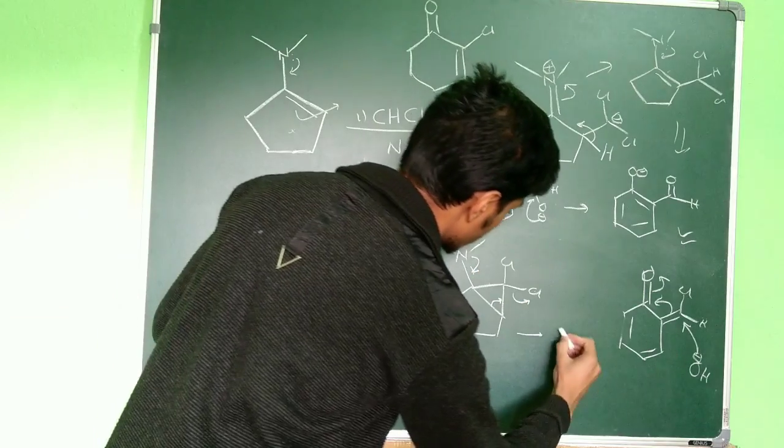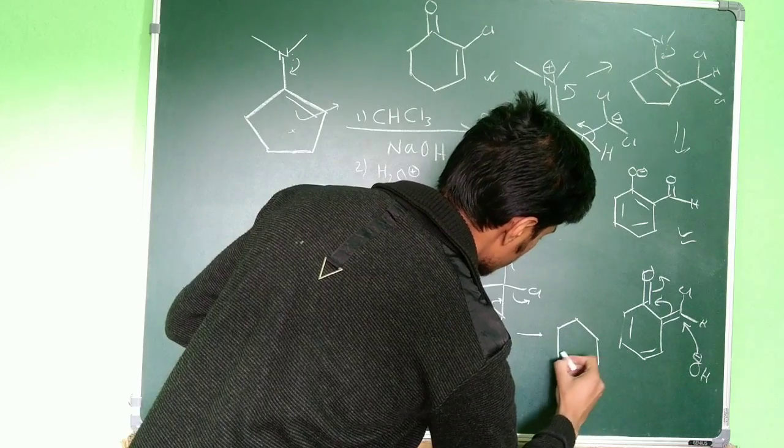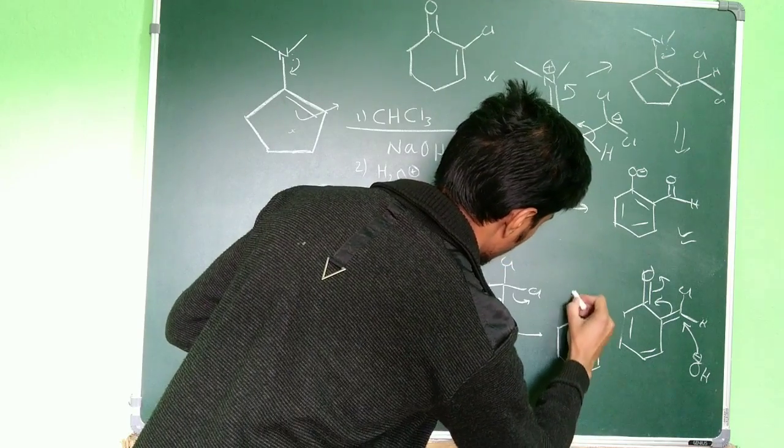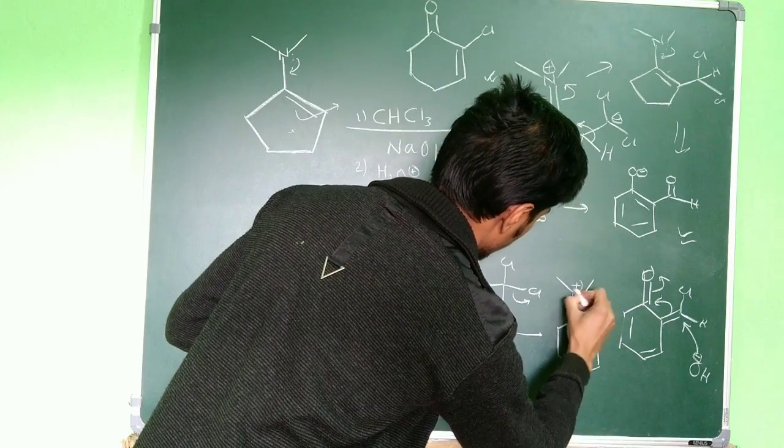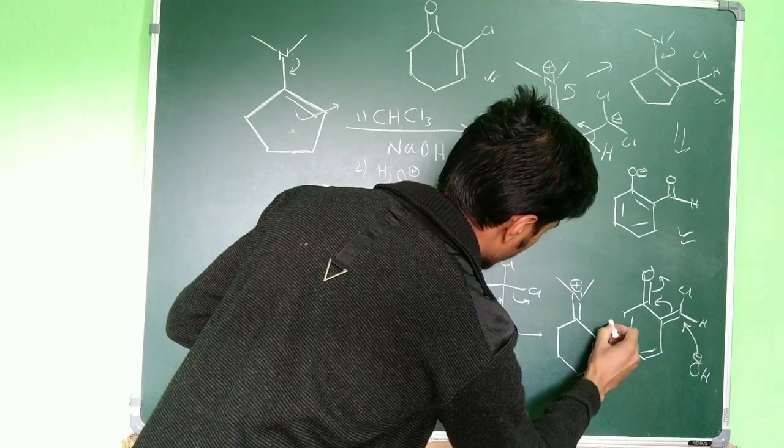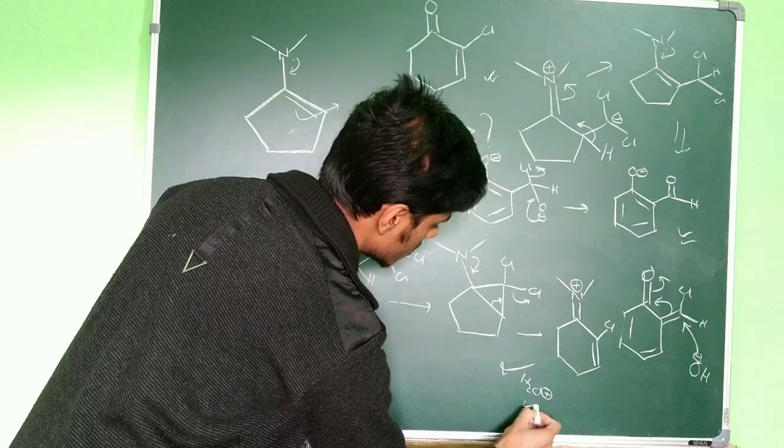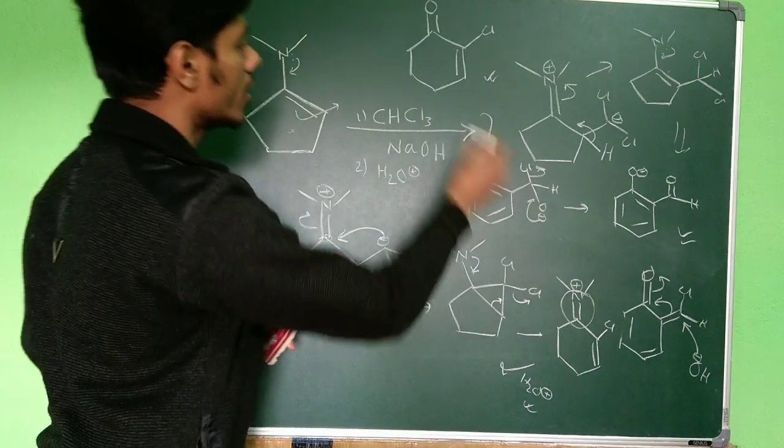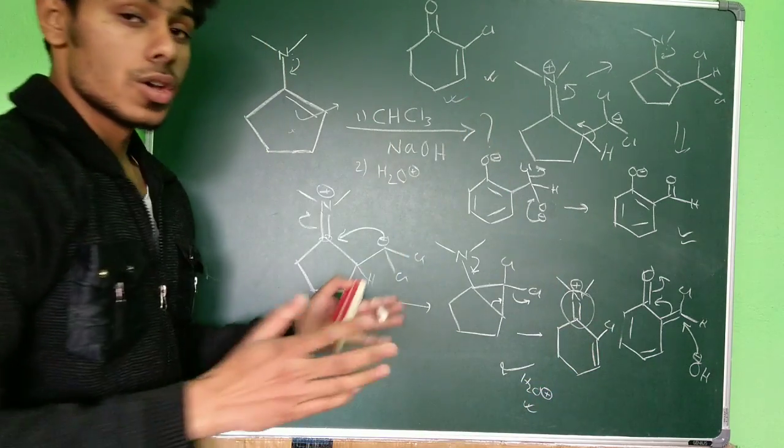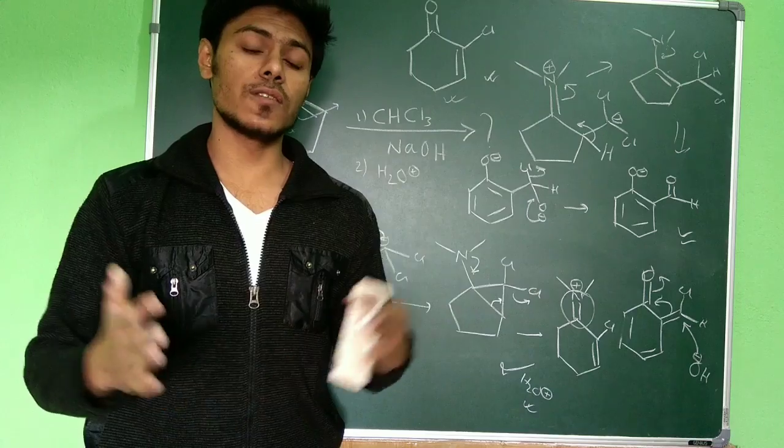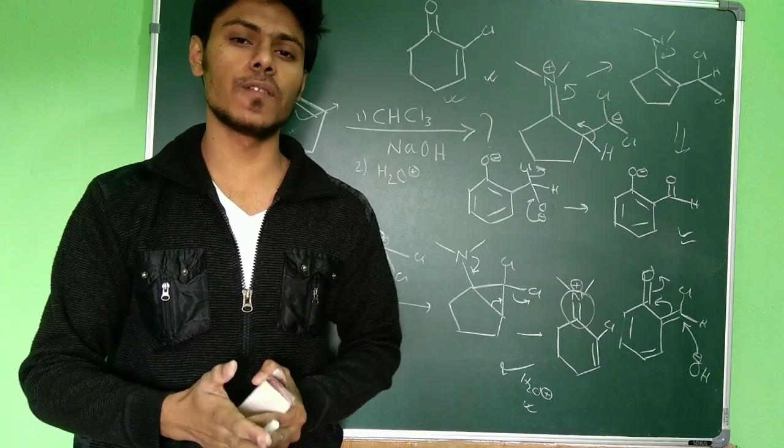So that's why this attack is favored instead of abstraction of H from there. Now what can happen? Then this nitrogen lone pair will again push, and you can see the reverse reaction can happen, that this bond will break. But another possibility is if this bond breaks, you will get a six-membered ring.